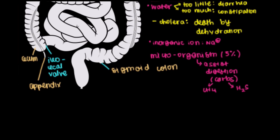Enough farting around — let's talk about the last part of our GI tract. After passing through the large intestine, the next place we go is the rectum. The rectum isn't responsible for any absorption or breakdown; the main thing the rectum accomplishes is storage. This is actually very important because once we've processed food and removed the water, we want to hold on to the waste product until it's a more appropriate time to expel it.